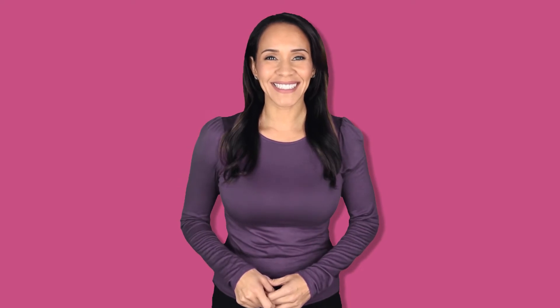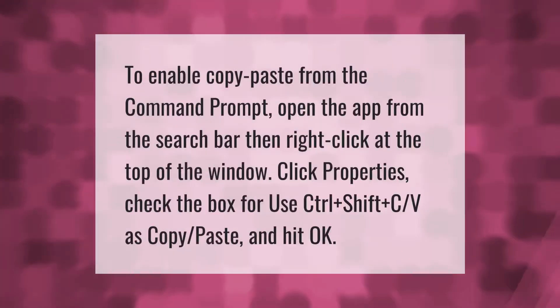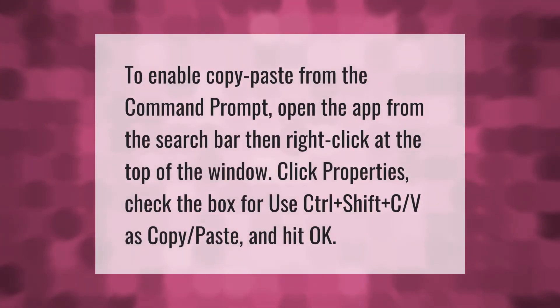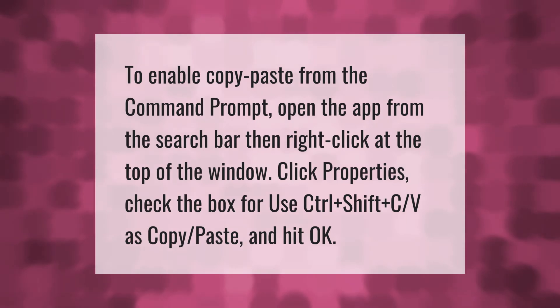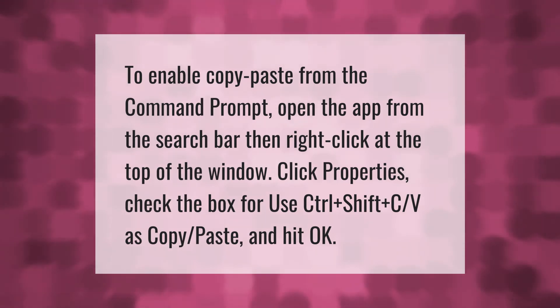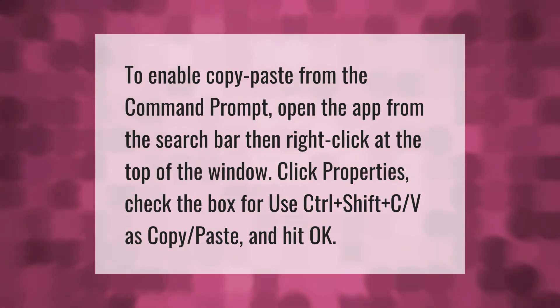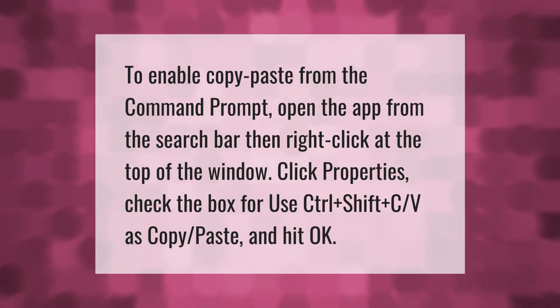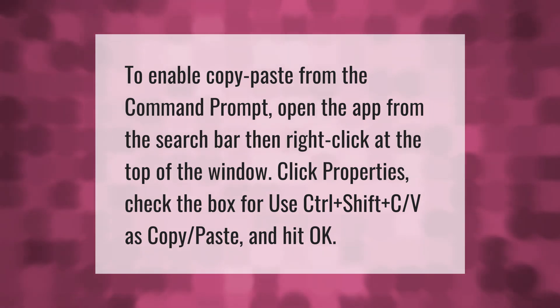To enable copy and paste from the Command Prompt, open the app from the search bar, then right-click at the top of the window and click Properties. Check the box for 'Use Ctrl+Shift+C/V as Copy/Paste' and hit OK.